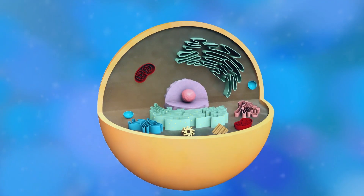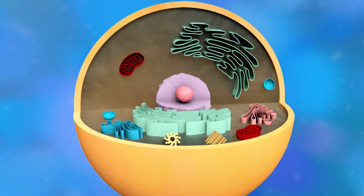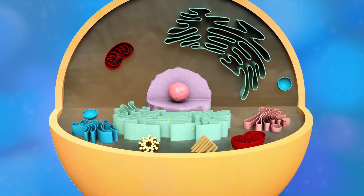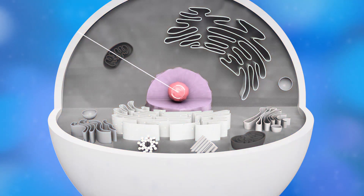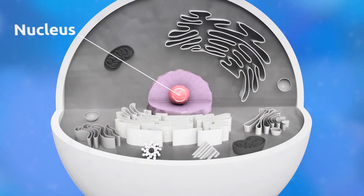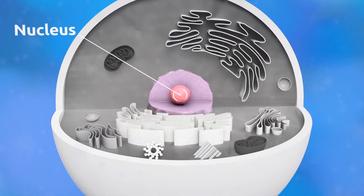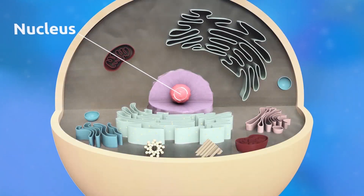An animal cell is a eukaryotic cell. DNA is stored in the nucleus, and the nucleus is in charge of all cell functions.